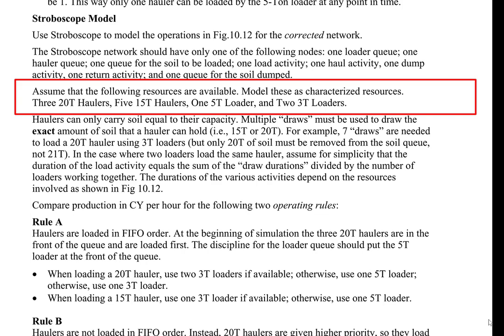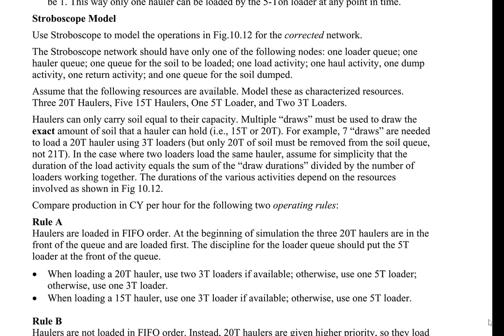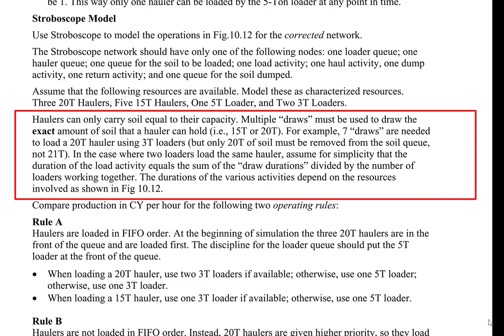In the stroboscope model, the following resources are available: three 20-ton haulers, five 15-ton haulers, one 5-ton loader, and two 3-ton loaders. In this model, haulers can only carry soil equal to their capacity. Multiple draws must be used to draw the exact amount of soil that a hauler can hold, that is either 15 tons or 20 tons.